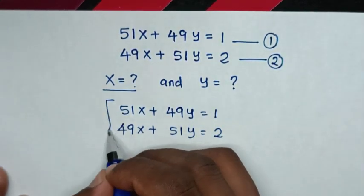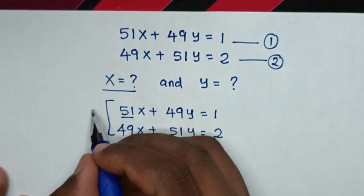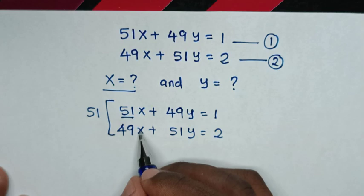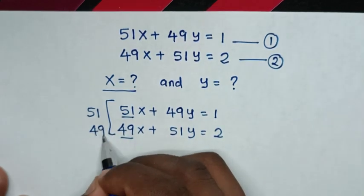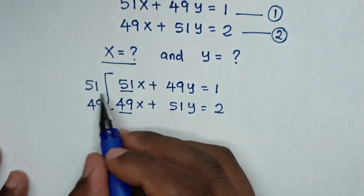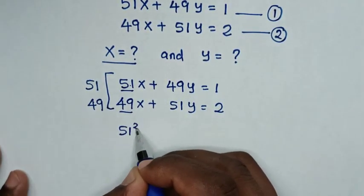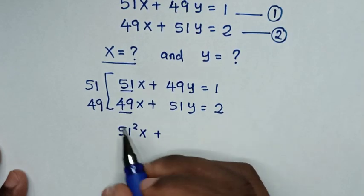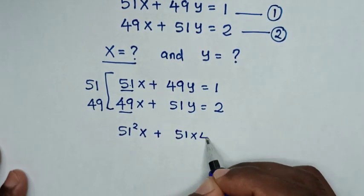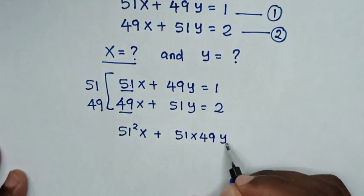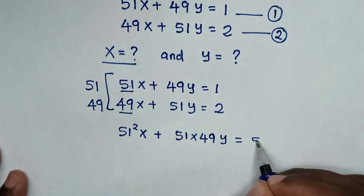From these two equations, in equation 1, the coefficient of x is 51, so we multiply by 51. And in the second equation, the coefficient of x is 49, so we multiply by 49. So this gives us 51 squared x plus 51 times 49y is equal to 51.